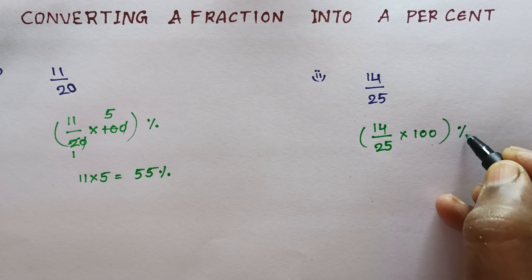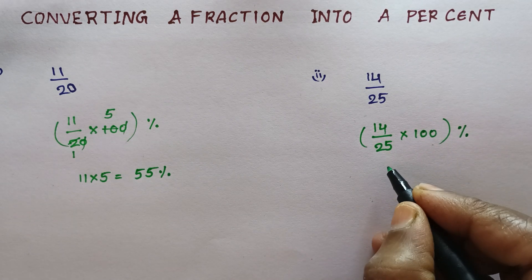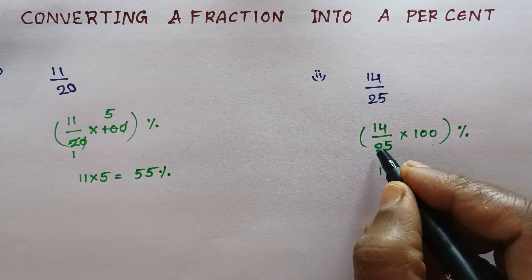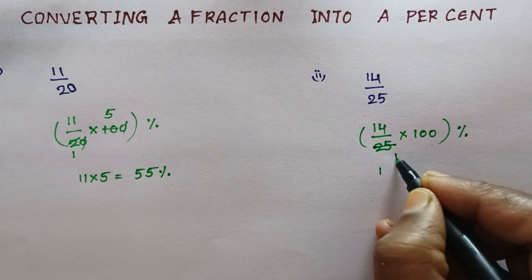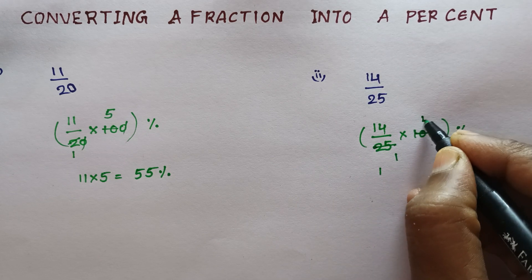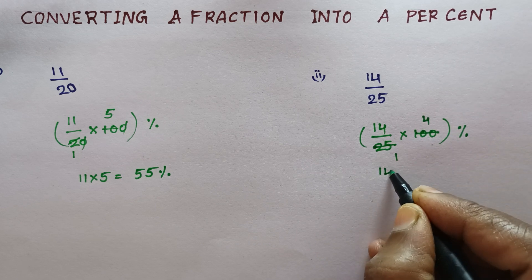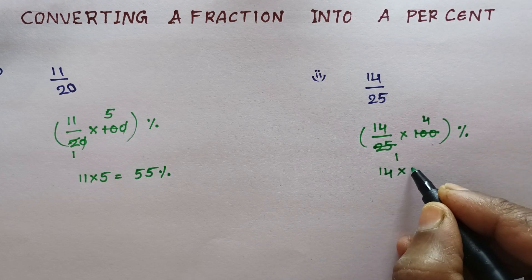Now, it will be a percentage. Or, 25 1s are 25, 4s are 14 into 4.